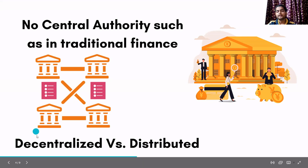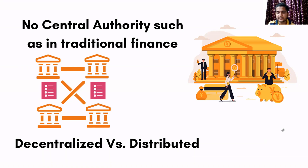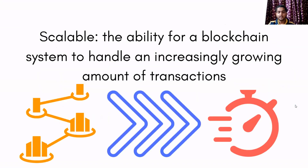Many people are confused between the terms decentralized and distributed. Simply put: decentralized means no centralized authority — no individual controls any blockchain; all participating nodes control it together. A distributed ledger means that a copy of every transaction occurring on the blockchain is held by all participating nodes. That is called a distributed ledger. I hope this clears up the confusion between decentralized and distributed.